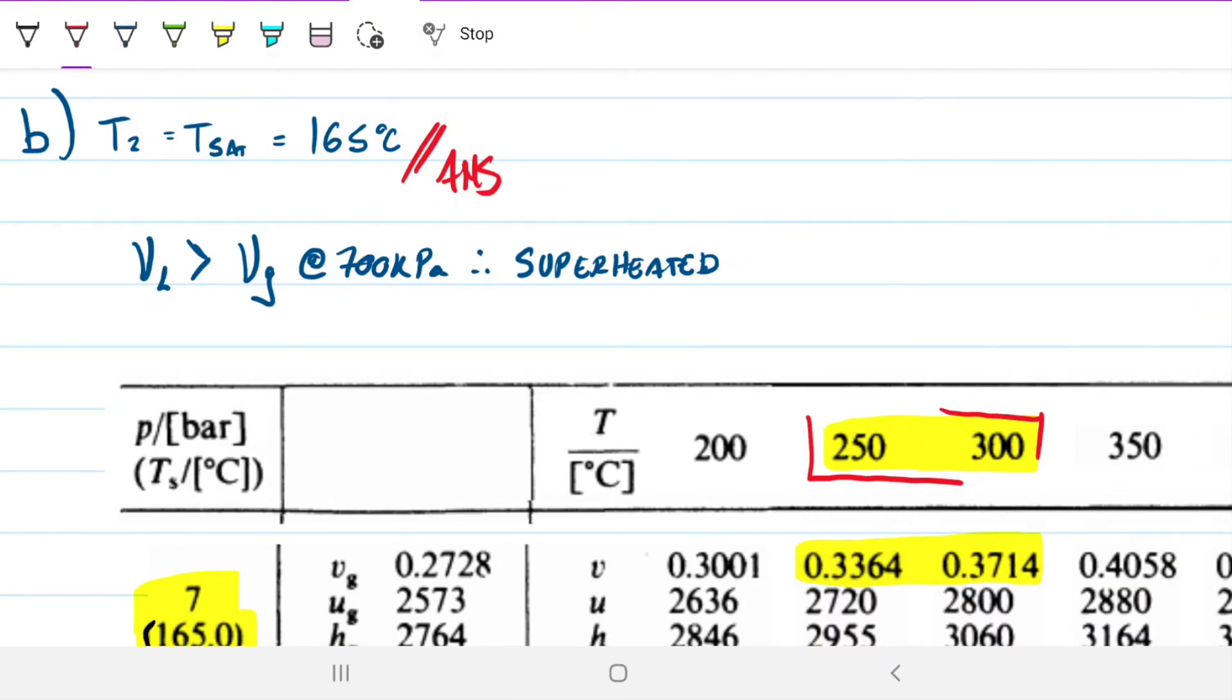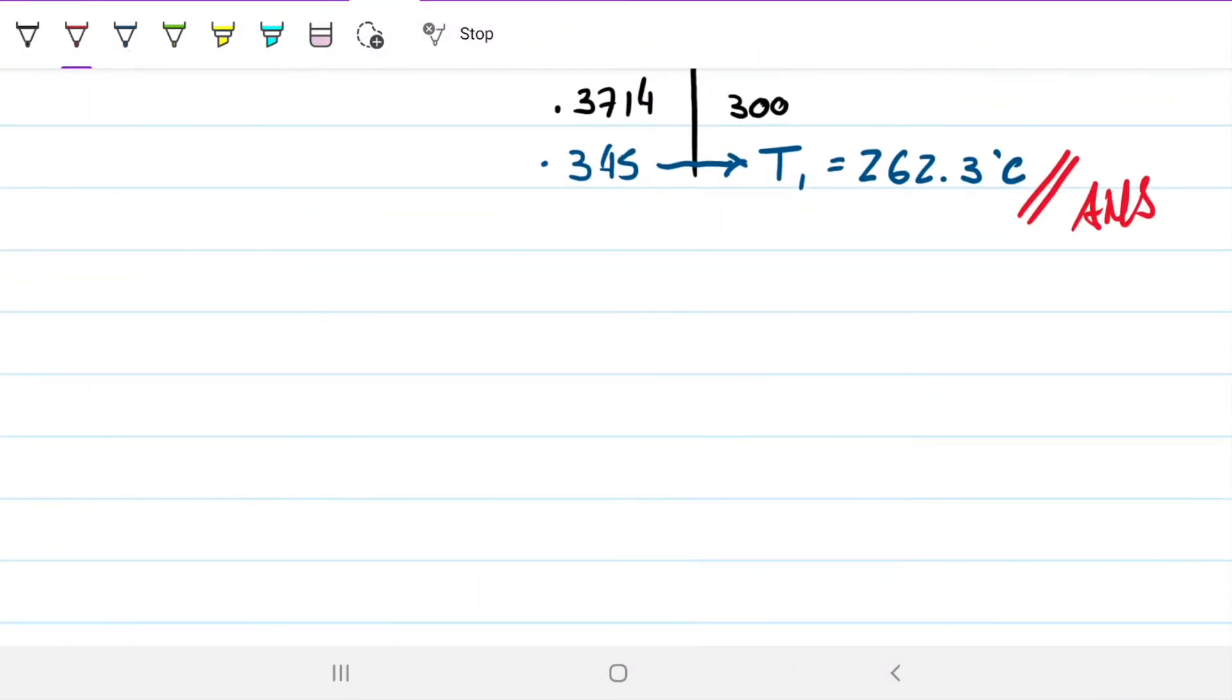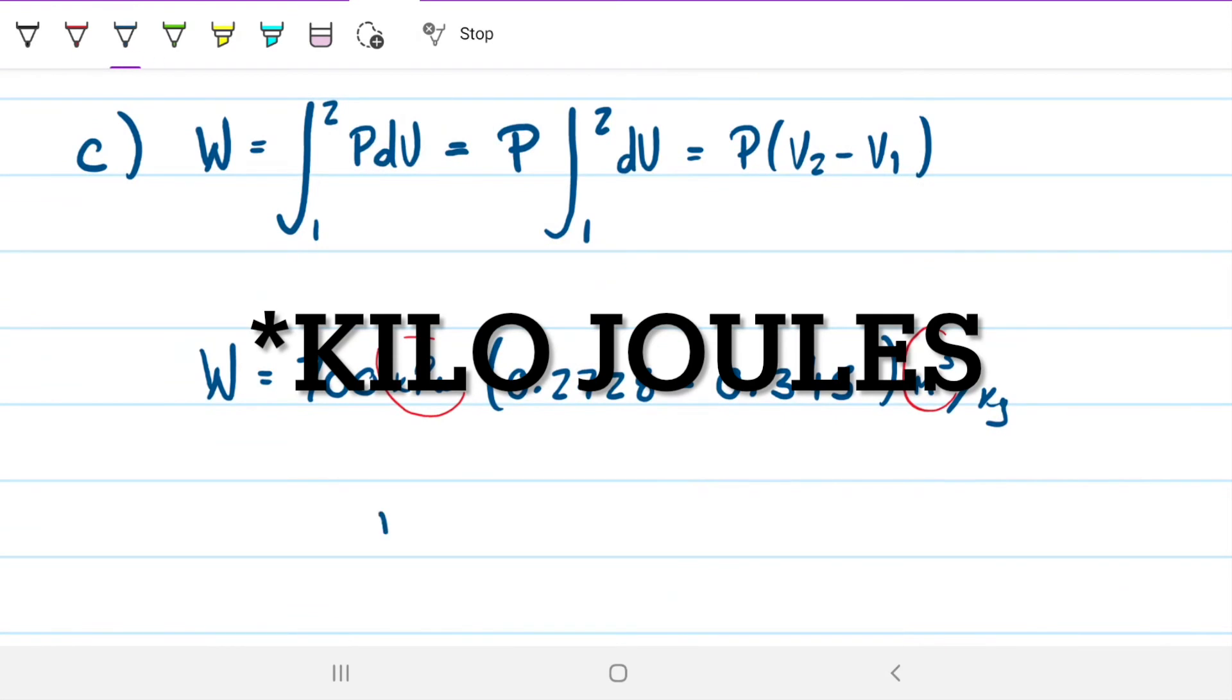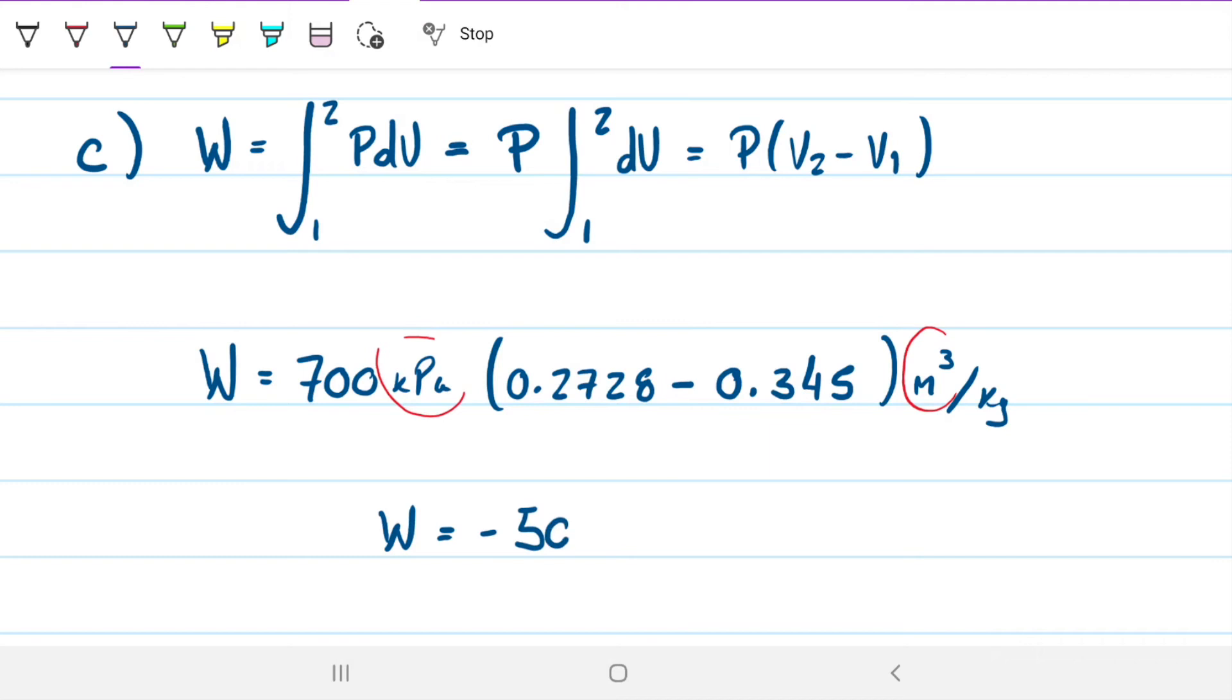Next part asks us: if the process is in a quasi-equilibrium state, what work is associated with the change? The work is the area underneath that curve. We could calculate the rectangle underneath the curve, but we can also do it mathematically by noting that work equals the integral, as we go from state 1 to state 2, of PdV. Because this is an isobaric process, our pressure can come out of the derivative because it's a constant, and we're left with the difference in volume. My work is 700 kilopascals times the difference. The final volume is the saturated vapor, 0.2728, and the initial one is 0.345. I got that the work is negative 50.54 kilojoules per kilogram.